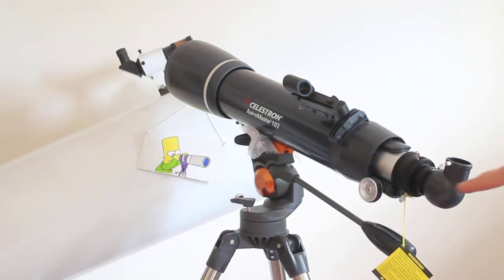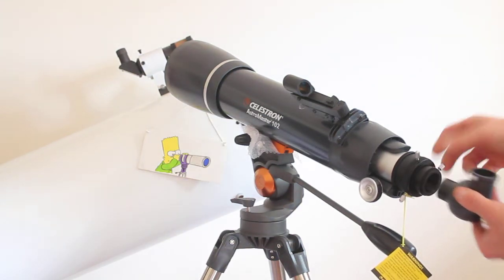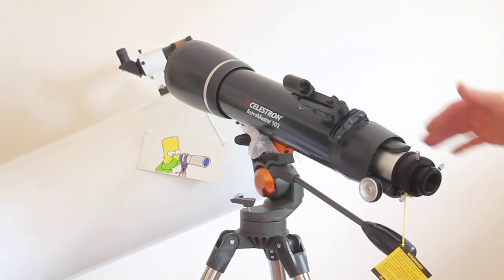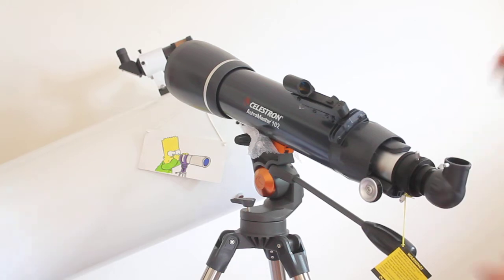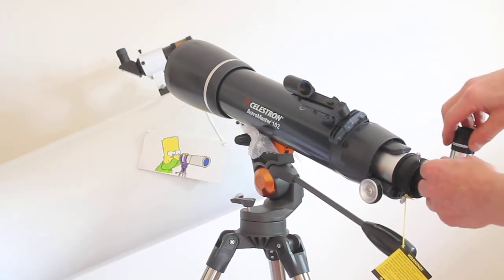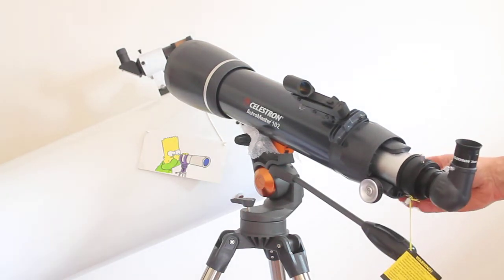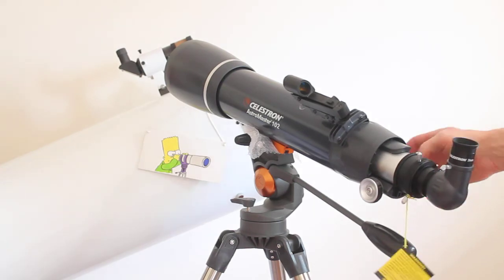Simple as that. Out of the box, put it on the tripod, diagonal done, eyepiece done, focus, and you're good to go. So this really is a good dual use telescope.